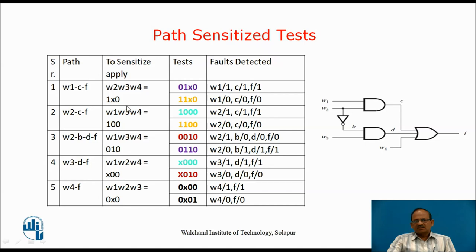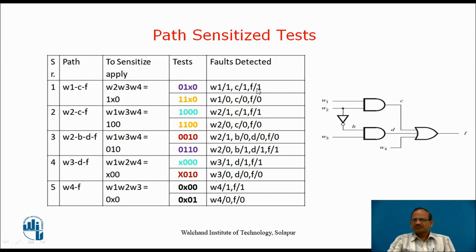The input to activate path W1, C, F is W2=1, W3=X (don't care), W4=0. By applying a test when W1 is 0, the output must be 0. But if the circuit is faulty, the output may be 1, due to W1 stuck at 1, C stuck at 1, or F stuck at 1. So the test 0,1,X,0 will determine these faults. On the same lines, when W1 is 1 the output should be 1, but if we get output 0, that may be due to W1 stuck at 0, C stuck at 0, and F stuck at 0.